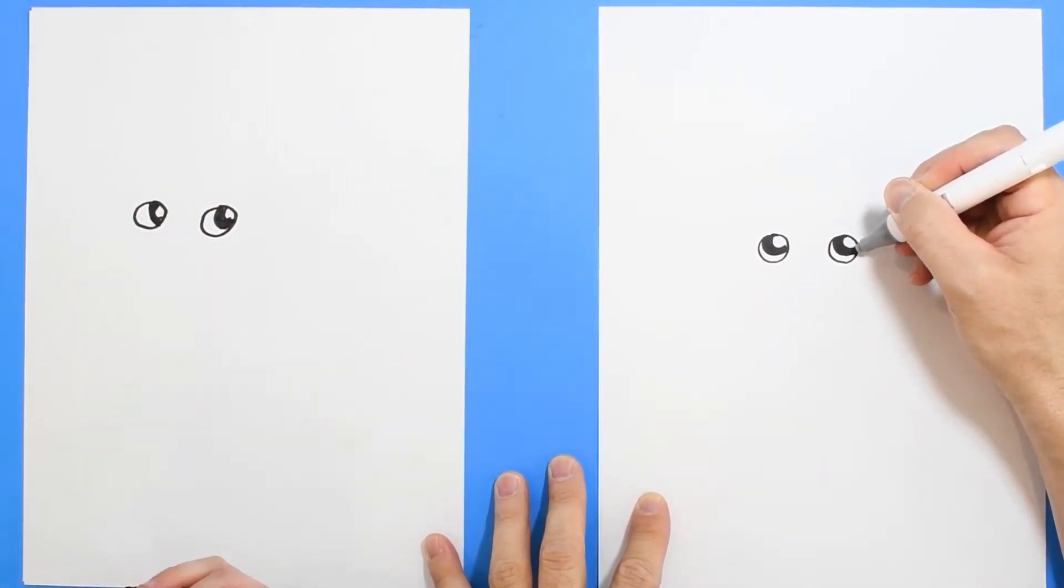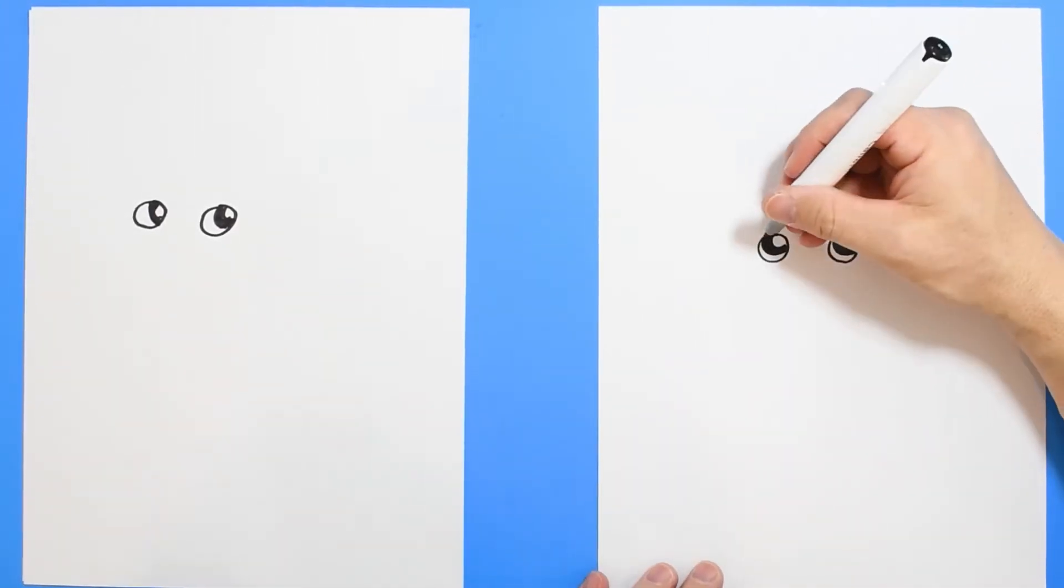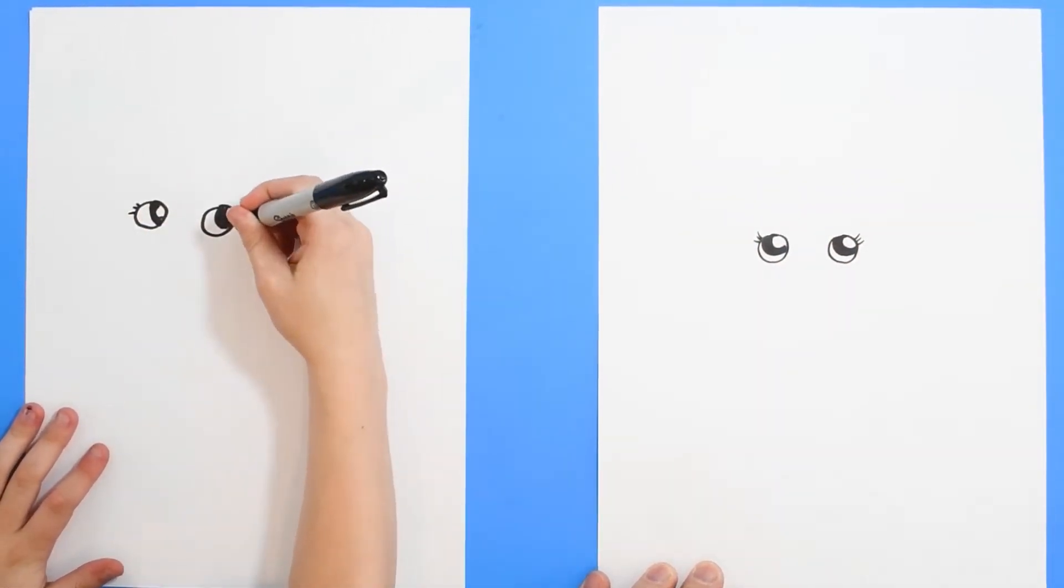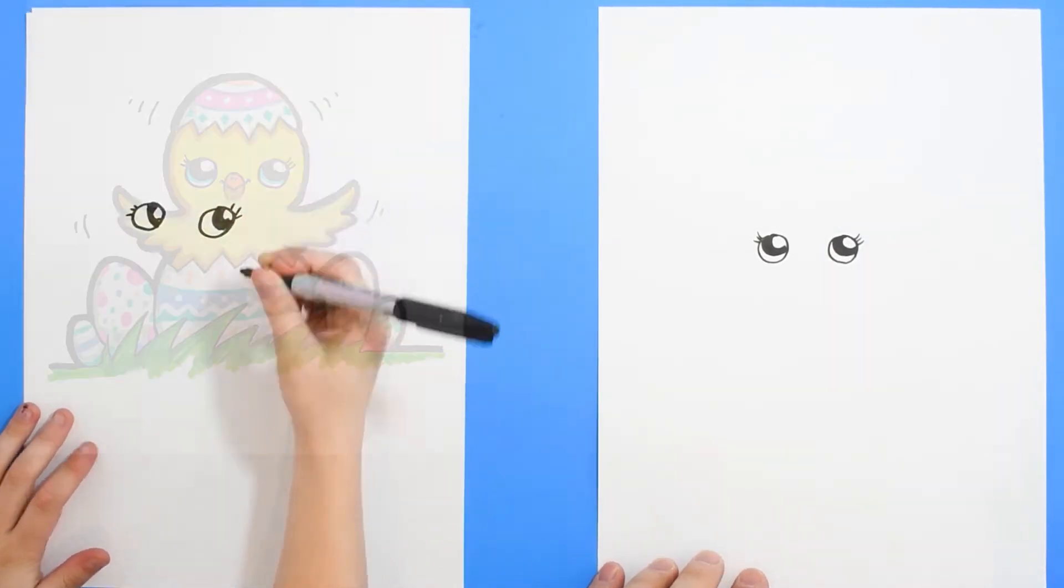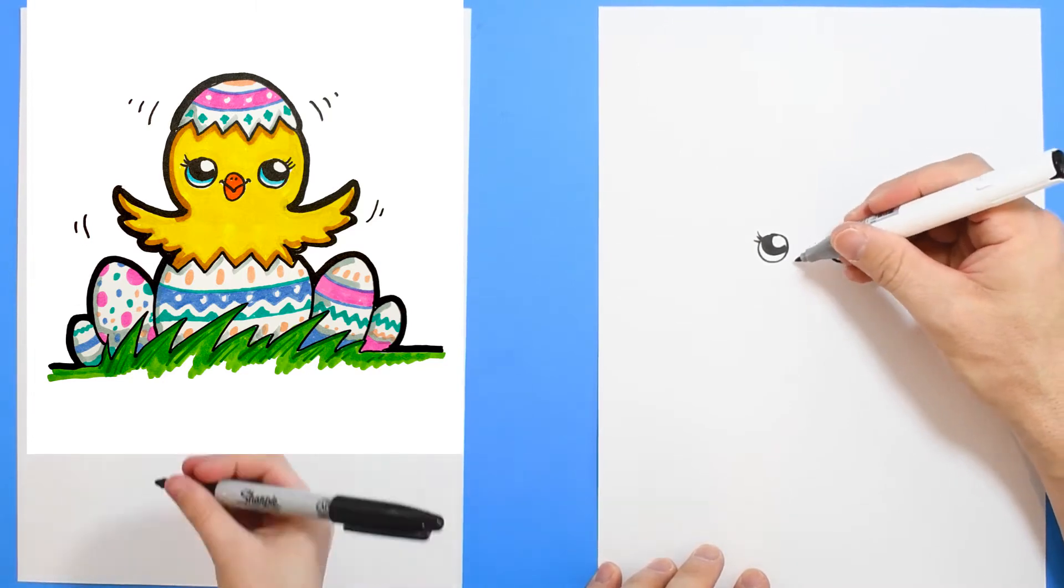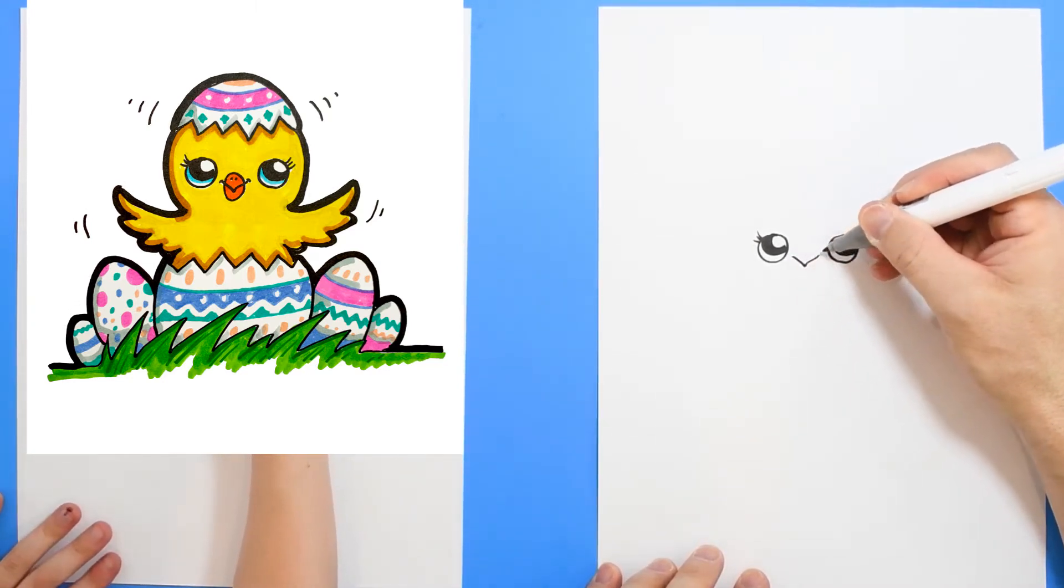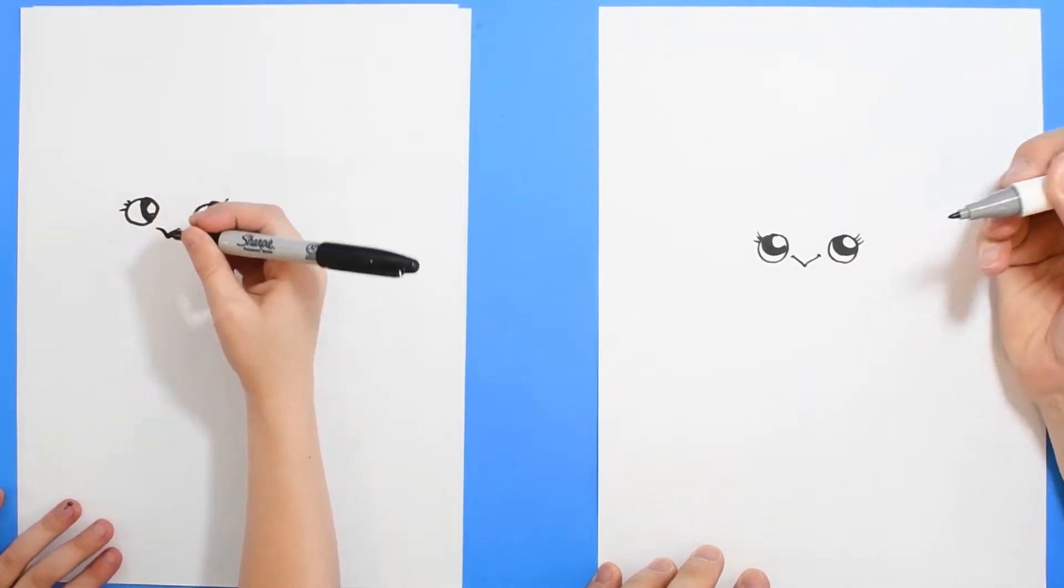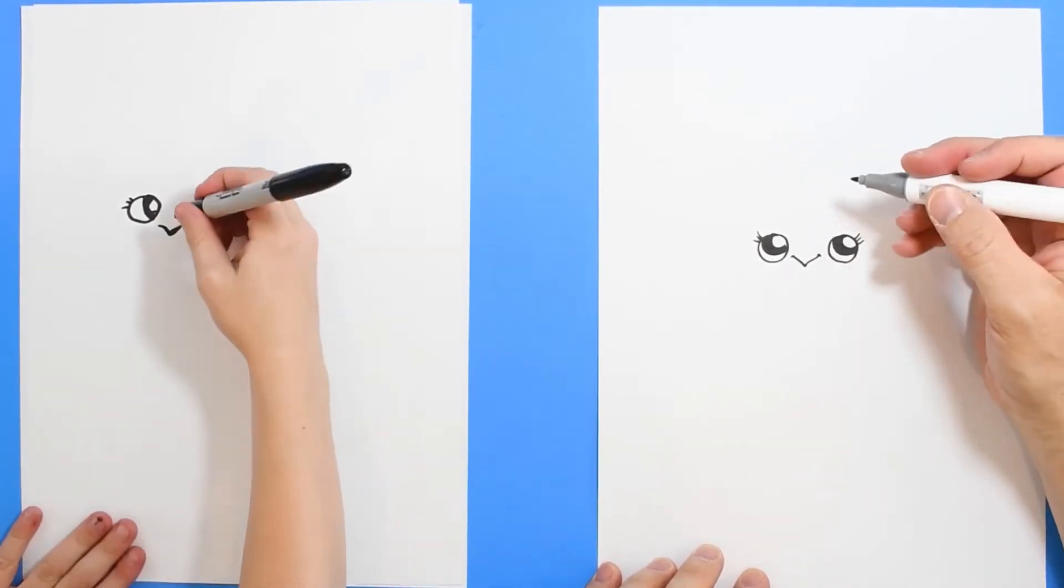Looks like we have our eyes. Let's do a couple of little eyelashes: one, two, three, one, two, three. Now we're going to draw the beak. Right here between the eyes we're going to do this pointy beak, and it points down. I put these little marks on the end to kind of indicate a smile.